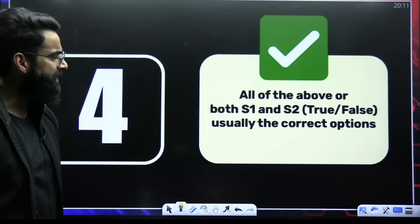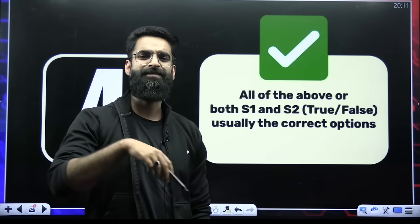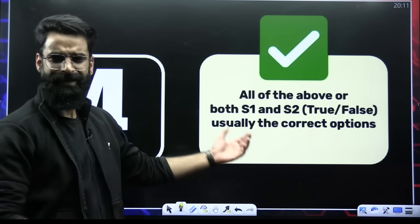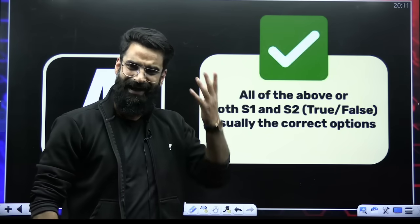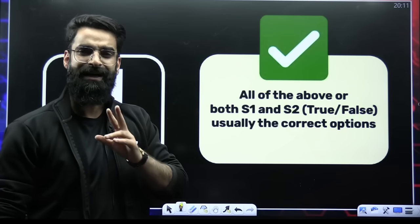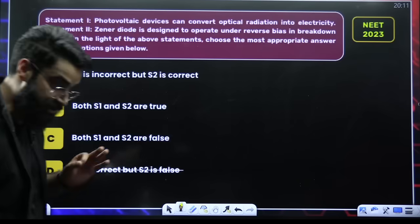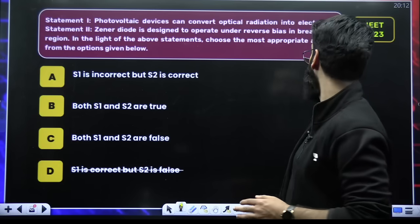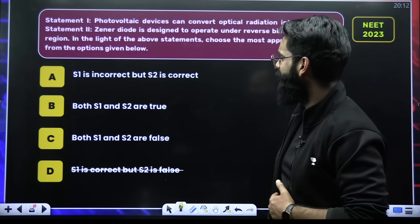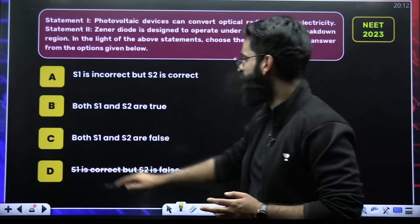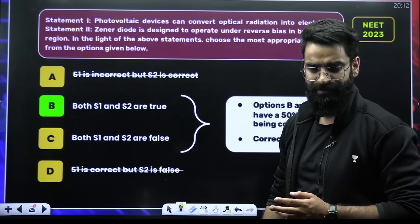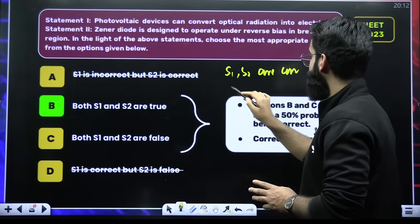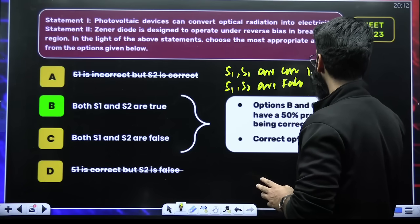Now the last and final trick: whenever you see those types of questions wherein you have to check whether statement one is correct, statement two is correct, statement one is false, statement two is false — in these sorts of questions, majority of the times after analyzing NEET examination questions, the correct answer is going to be statement one and statement two both are correct. And those questions wherein the option is 'all of the above' — a lot of times 'all of the above' is also correct. For example, this question from 2023: I'll just mark statement one and statement two — both are true — as the correct one. So option B is correct.